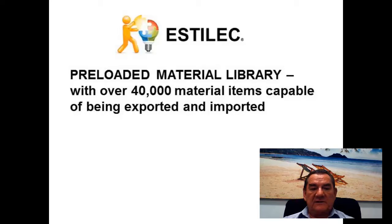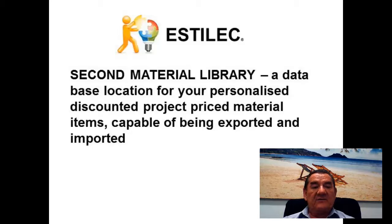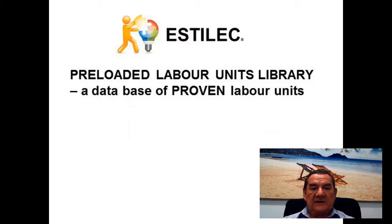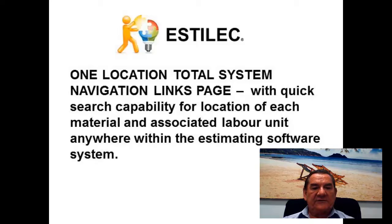The system includes a pre-loaded material library with over 40,000 material items capable of being exported and imported, a second material library as a database location for your personalised discounted project price material items, and a pre-loaded labour units library — a database of proven labour units. It also features a one-location total system navigation links page with quick search capability for locating each material and its associated labour unit anywhere within the estimating software system.